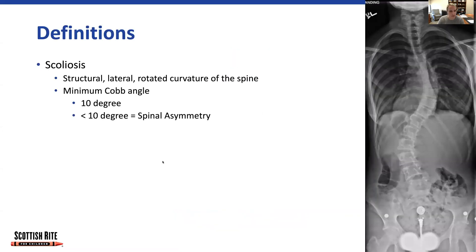Scoliosis is a structural, lateral, rotated curvature of the spine. To qualify as true scoliosis, the minimum Cobb angle must be 10 degrees. Cobb angle is measured as the angle between the most tilted vertebrae in the curve of interest. So here it would be this vertebrae to this vertebrae, and that would measure the lumbar Cobb angle. And for the thoracic curve, it would be this vertebrae to this vertebrae, and that would measure the thoracic Cobb angle.